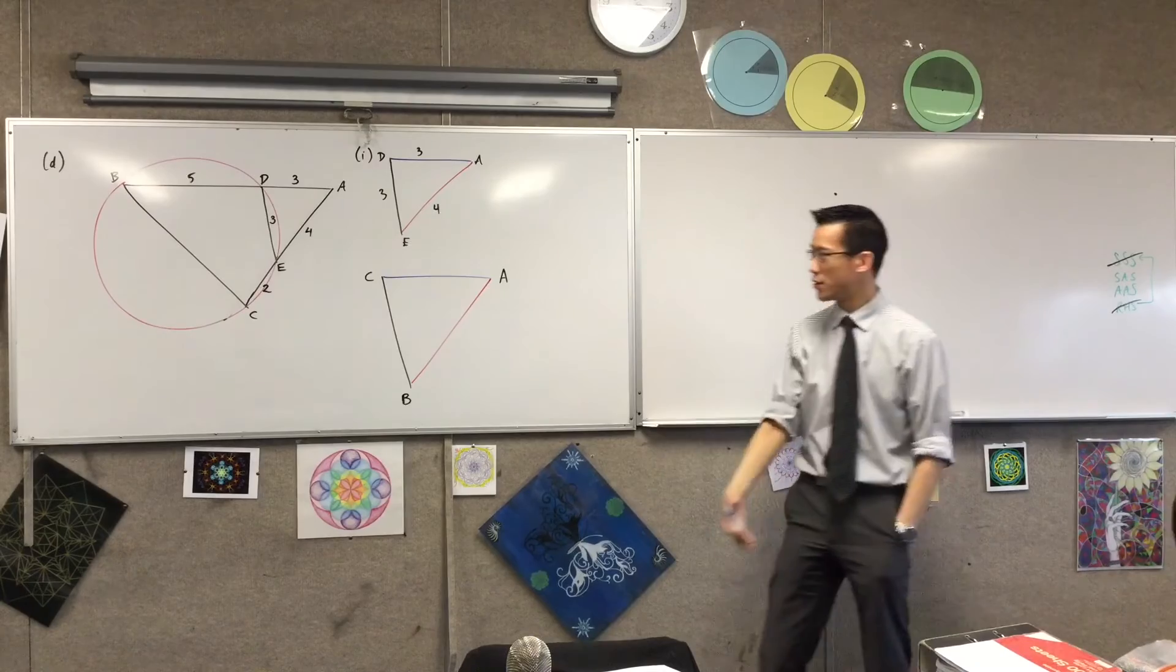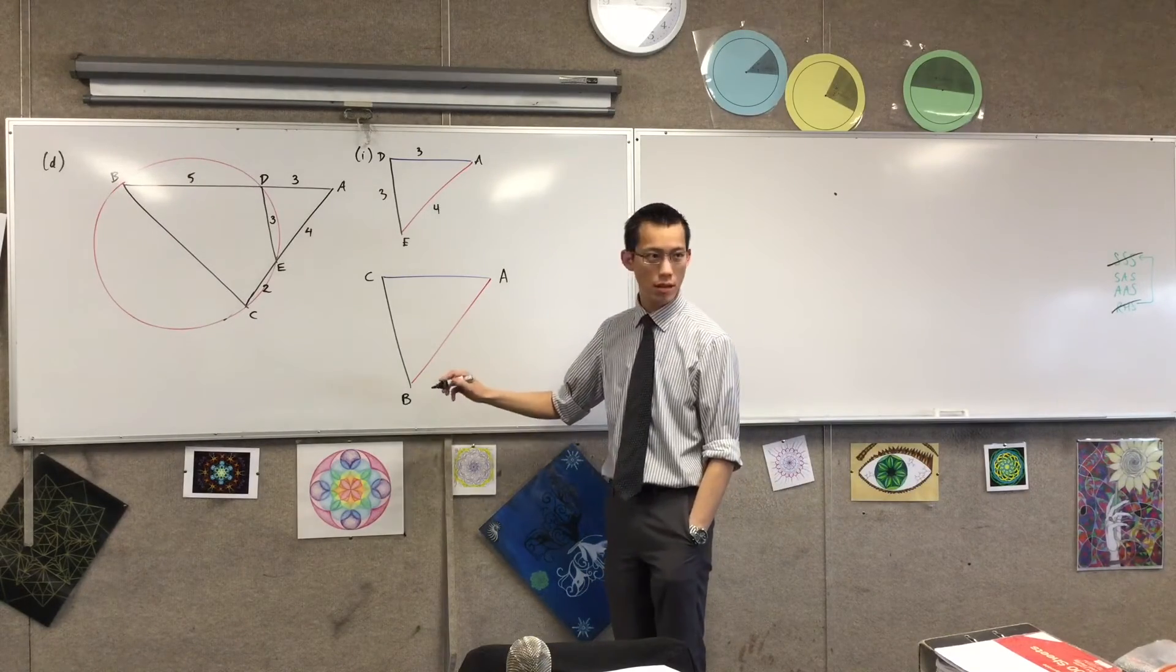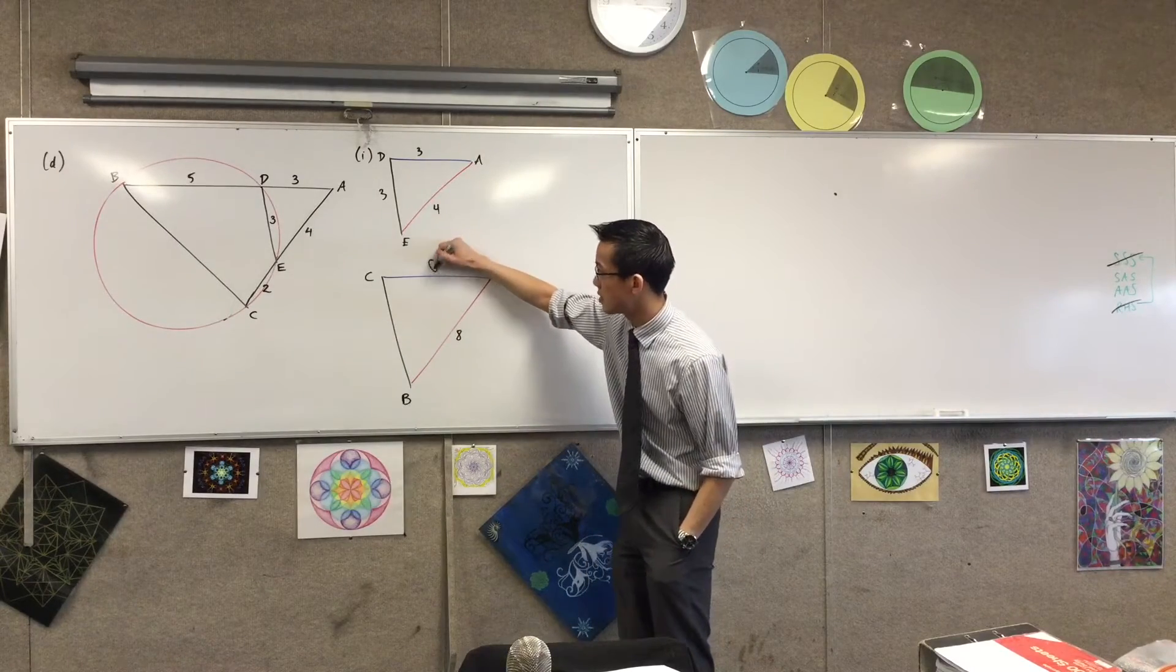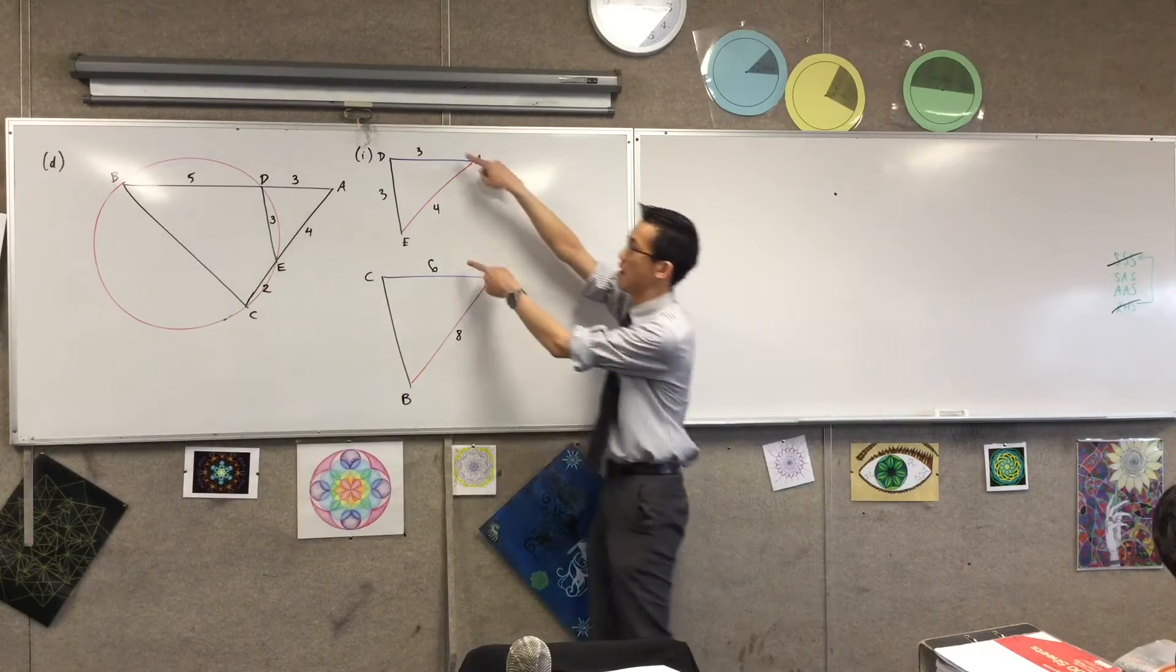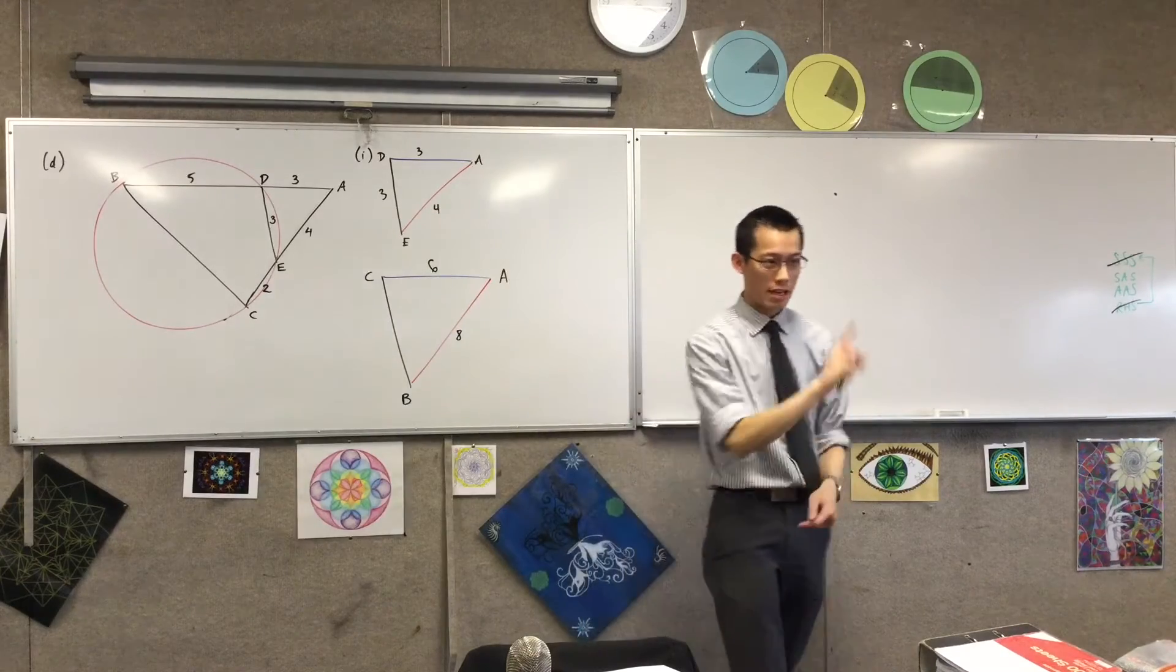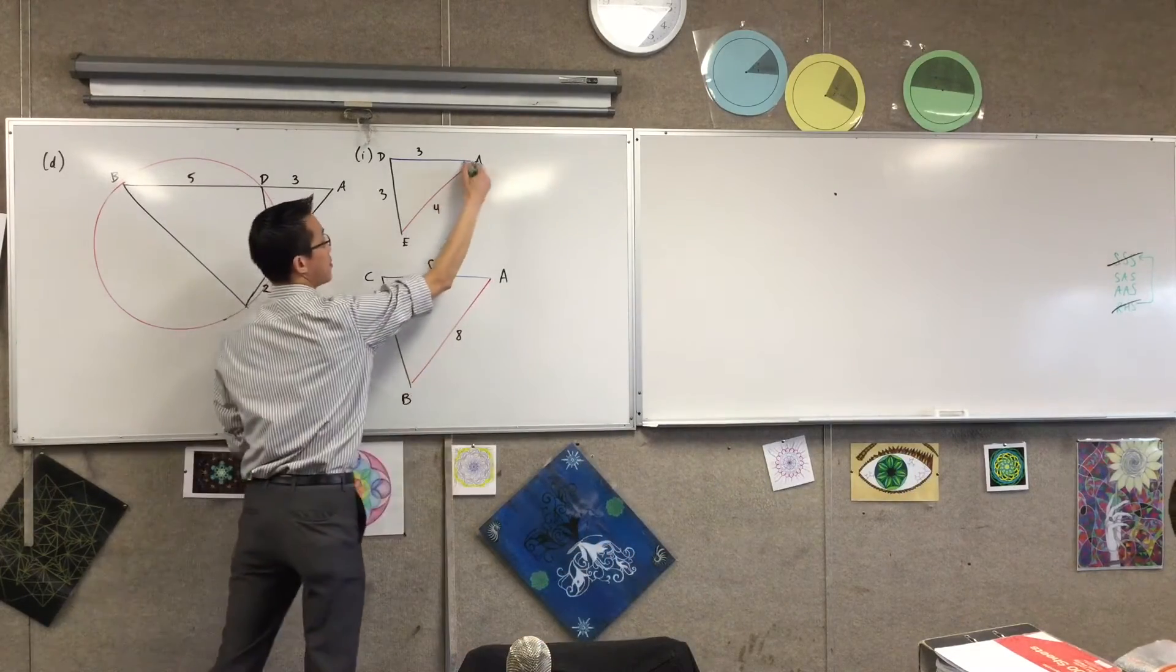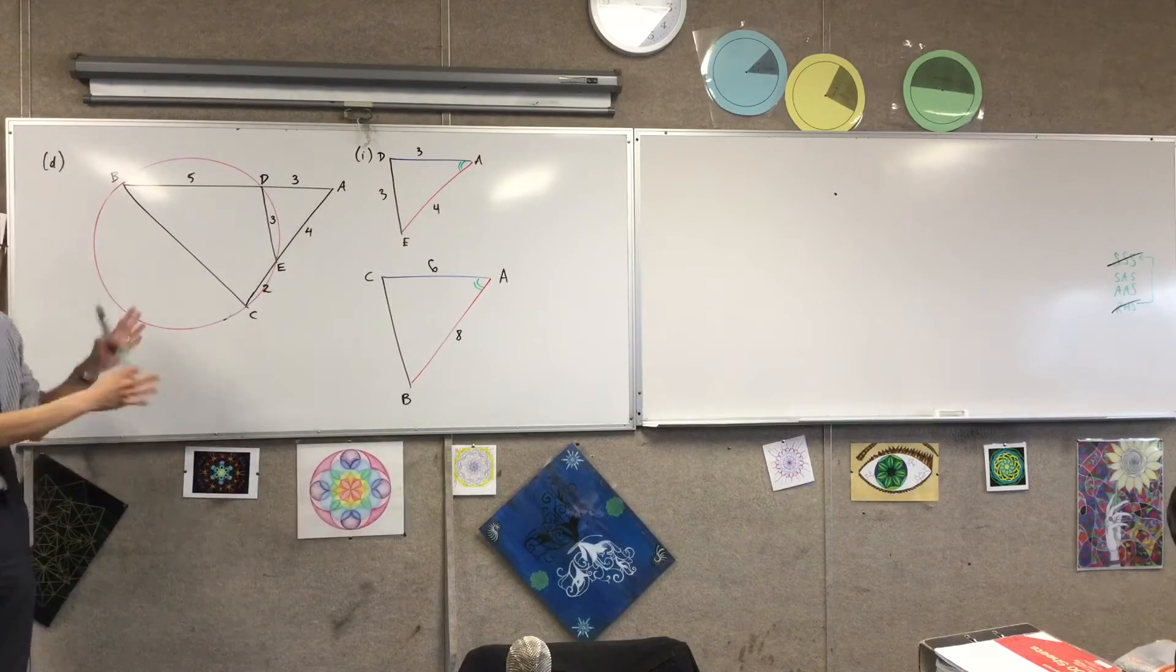That might not be immediately obvious to you, but once I put in the numbers, I hope you'll see. A, B is how long? It's the longer side. And then A, C is 6. AC? It's the shorter side. Ah, now you can see. There's a corresponding pair, there's a corresponding pair. Looking good. I need one last fact again. Do you remember what the last fact is? Yeah, I need the included angle. And it just so happens that this angle is in fact common. So I'm pretty much done.